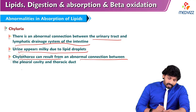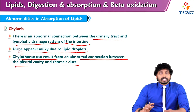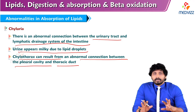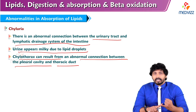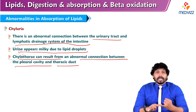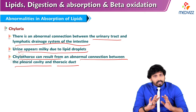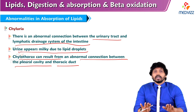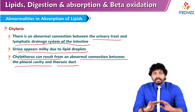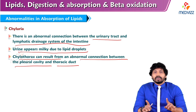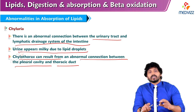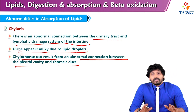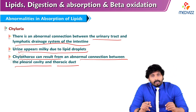Chylothorax can result from an abnormal connection between the pleural cavity and the thoracic duct. These are all the abnormalities related to digestion and absorption: steatorrhea because of a defect in digestion due to pancreatic lipase deficiency; absorption defects due to bile salt deficiency from obstructive biliary duct; and chyluria, where an abnormal connection between the urinary tract and lymphatic drainage causes leakage of chyle into the urine. That's all about abnormalities of digestion and absorption of lipids.